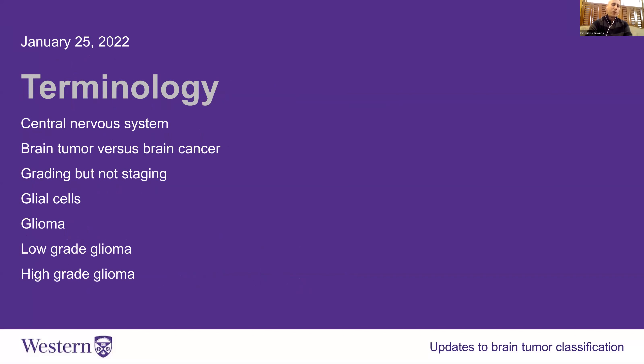The central nervous system refers to the brain and the spinal cord, as opposed to the nerves that are coming out to the legs or the arms, for example.